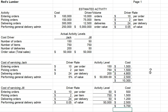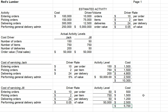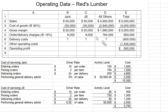We make the same calculations for Jill, taking the cost drivers and multiplying by Jill's activity level, and we find a total cost of servicing Jill of $5,700. We can see the calculated cost of servicing Jack is higher than that of Jill, and higher than our original expectation using the percentage of revenues approach.